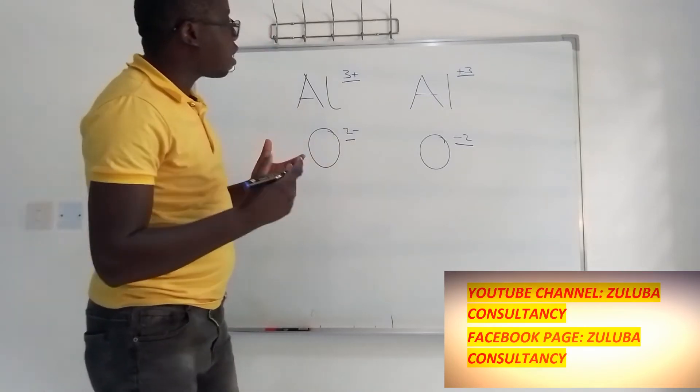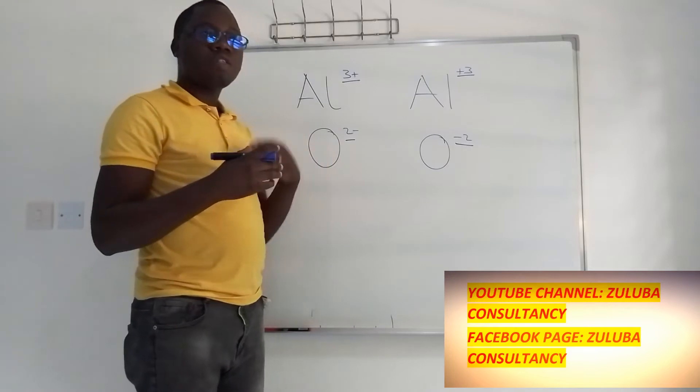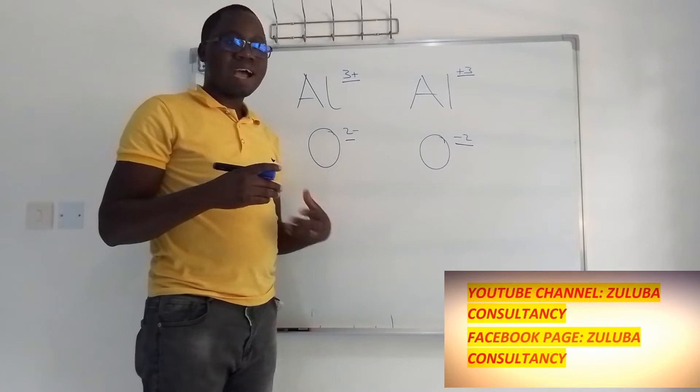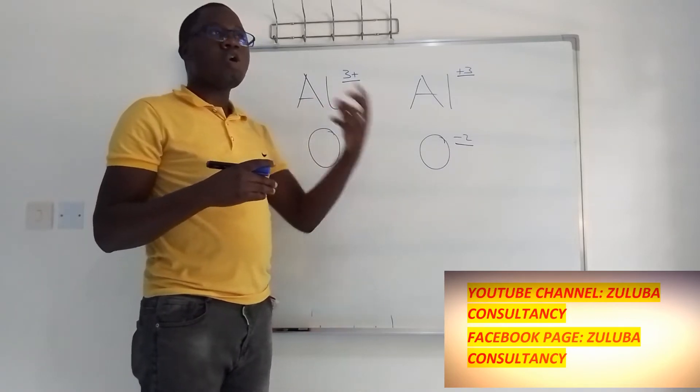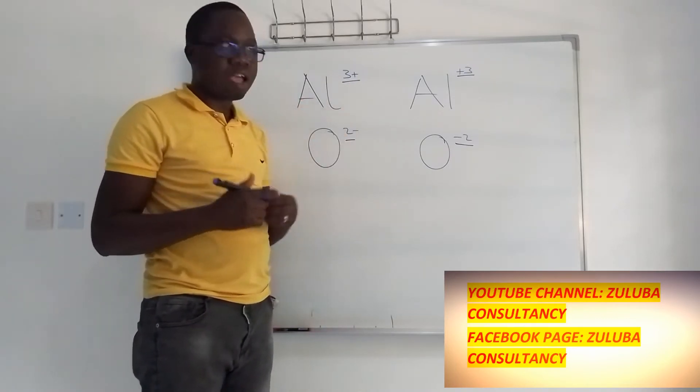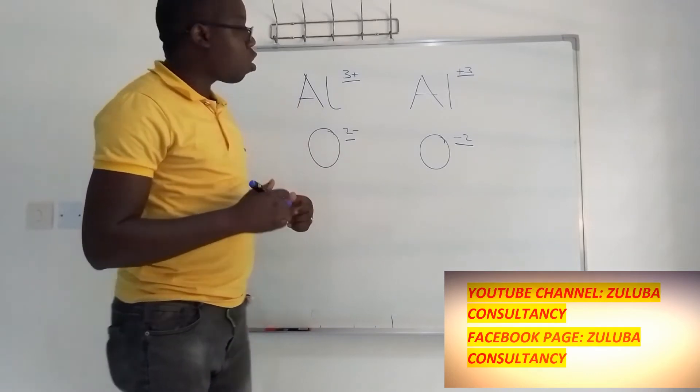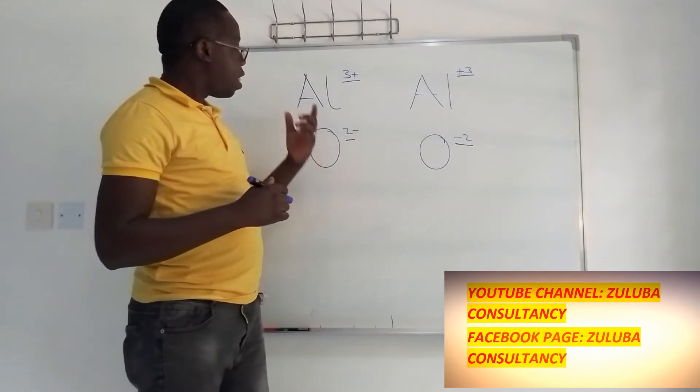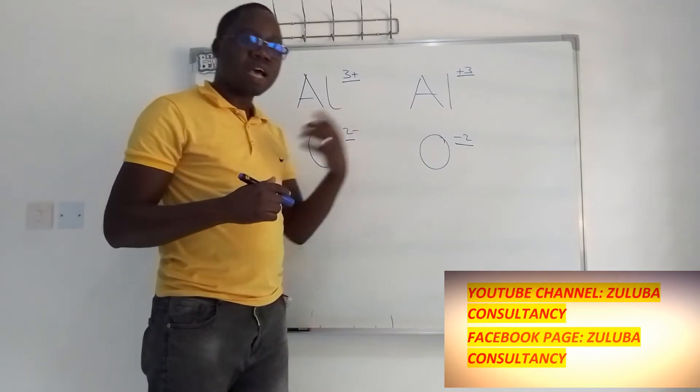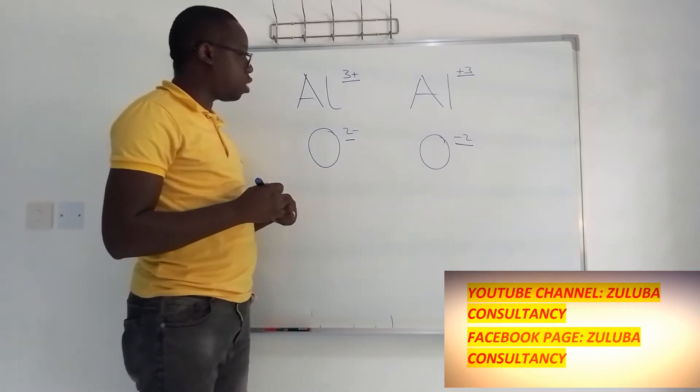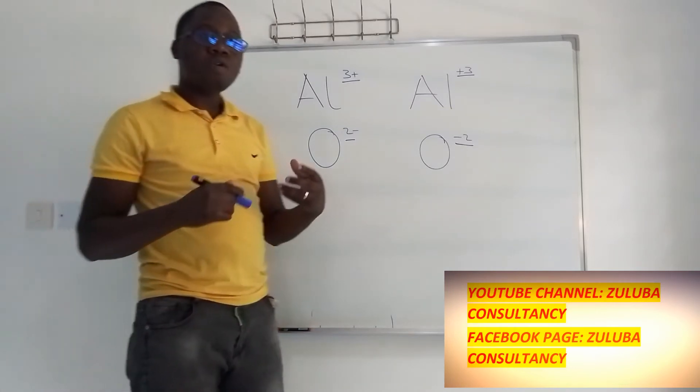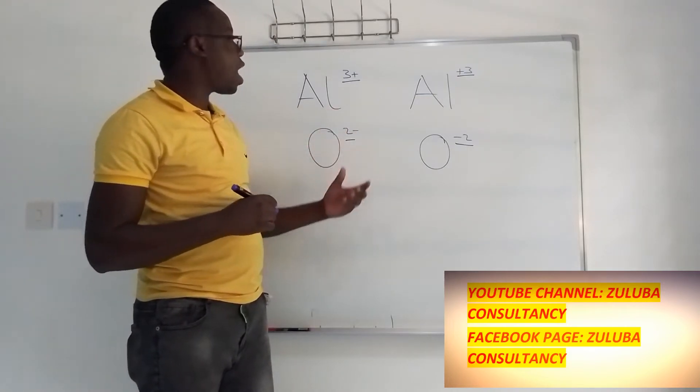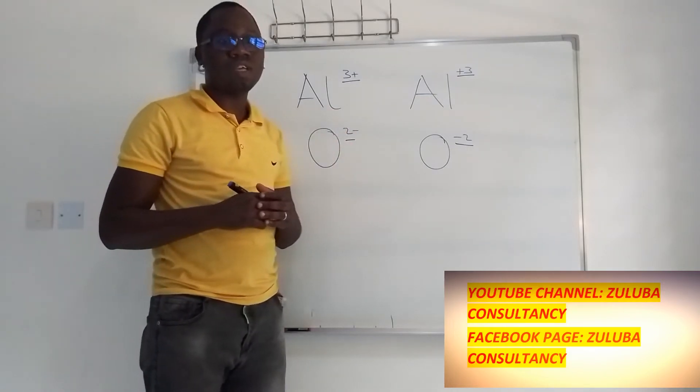How we write this number explains to us if you are talking about the oxidation number or the ionic charge. Now what is the ionic charge? Well, the ionic charge tells us either the atom has gained or lost some electrons for it to become an ion. So if an atom has gained electrons that atom becomes an ion which is negatively charged.